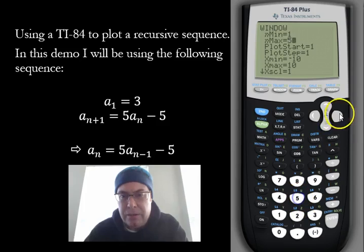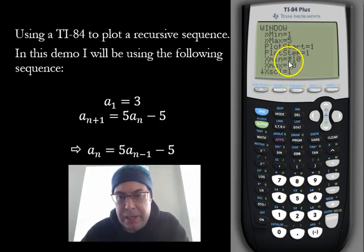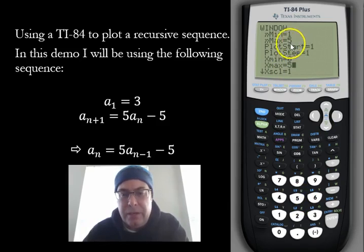And then the x minimum should be—let's make this minimum at 0, and then we're going to go out to 5. So x max should be the same as the number for the max value.